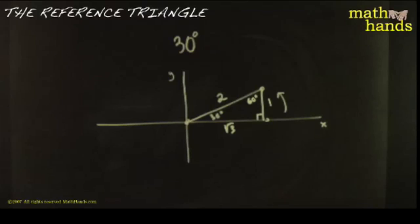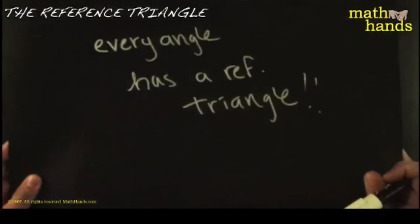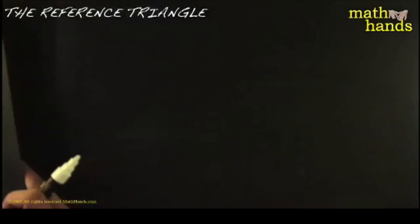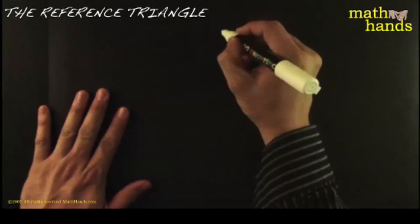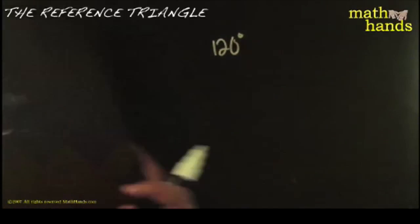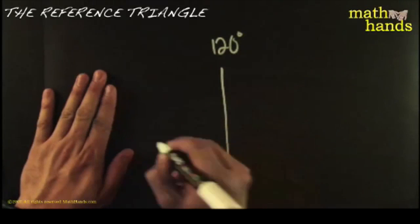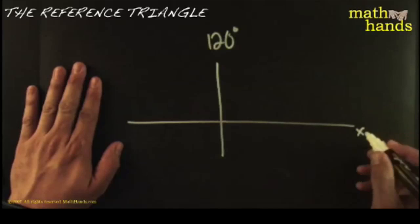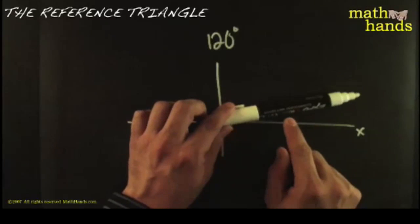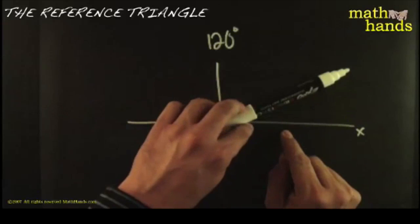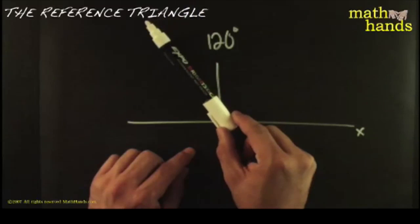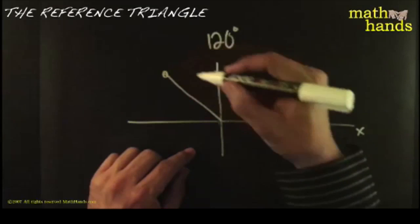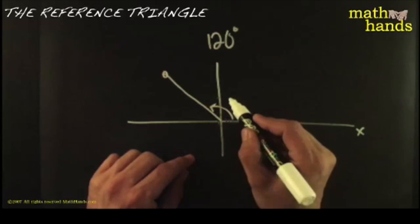If you think that was easy, well it was. Let's try another example. Again, what's the name of the game today? Every angle has a reference triangle. Let's say a hundred and twenty degrees. Every angle has a reference triangle, so this one must have one. Start on the xy plane — this is the positive side. For a positive angle, always go counterclockwise. You've got ninety degrees, and you need thirty more — that would be right around here. That right there is a hundred and twenty degrees.